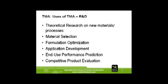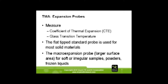You can use it in many different R&D applications. We have two different kinds of expansion probes. One is a flat tip, about a tenth of an inch in diameter, used for solid materials. Then we have a macro probe, which is about 0.25 inches, used for soft or irregular-shaped powders or frozen liquids. It measures coefficient of thermal expansion and glass transition temperatures.